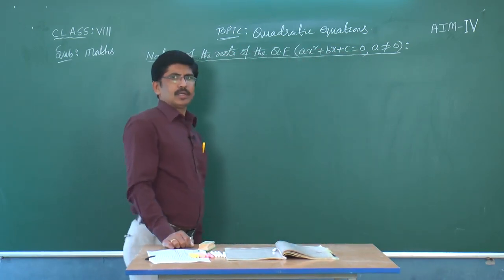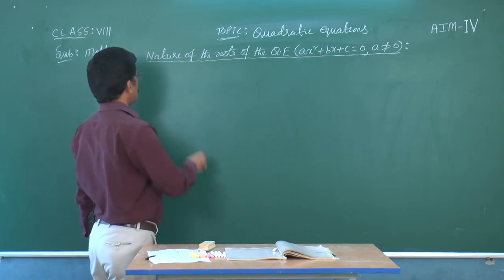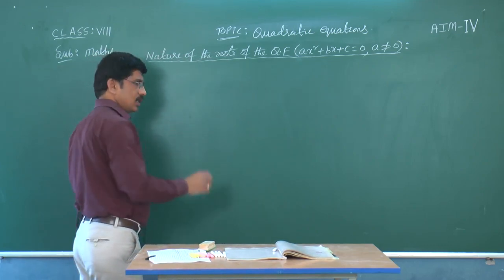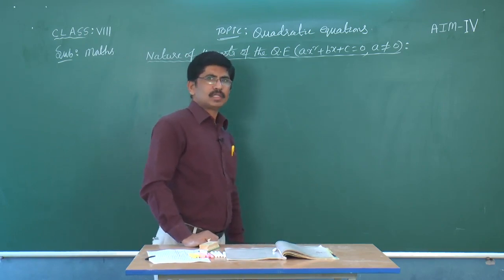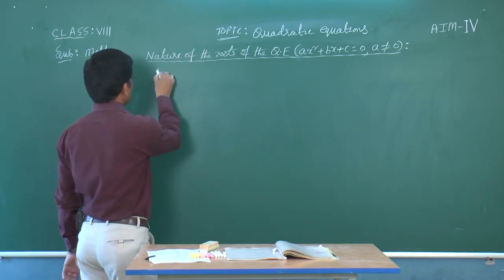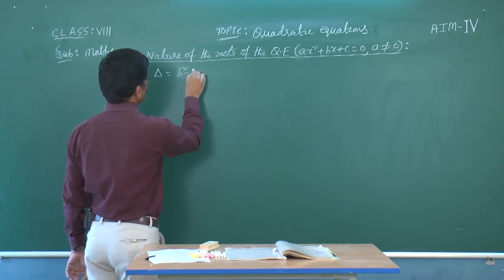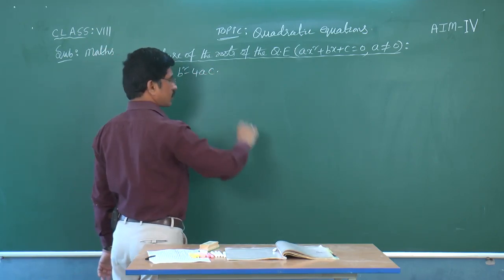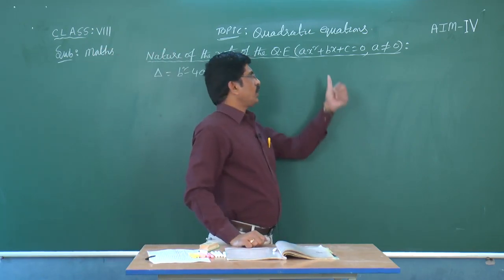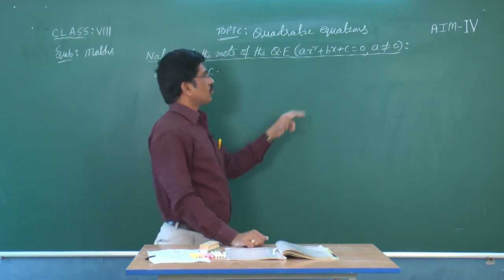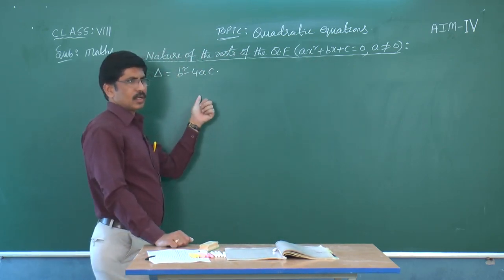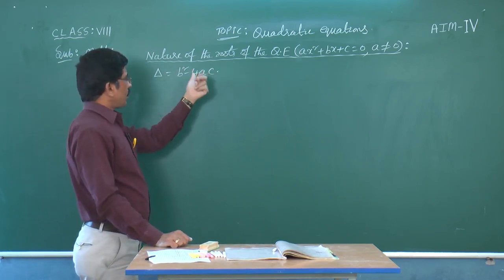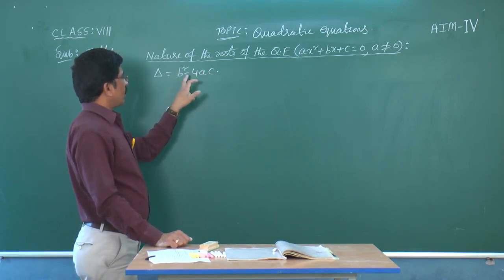We know that the discriminant, which is familiar from previous classes, is delta equals B squared minus 4AC. We find the nature of the quadratic equation using delta. The nature of the roots depends on delta.